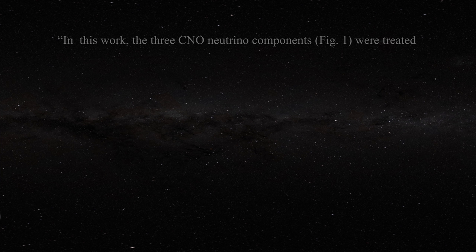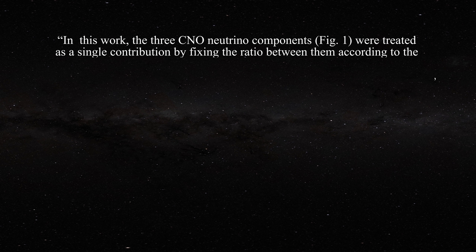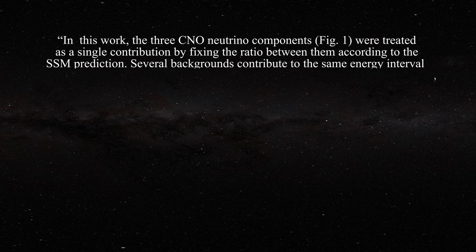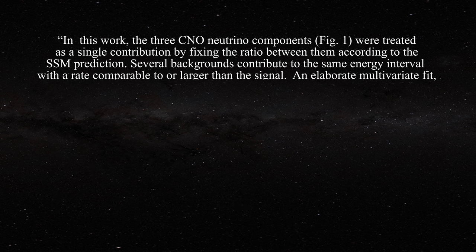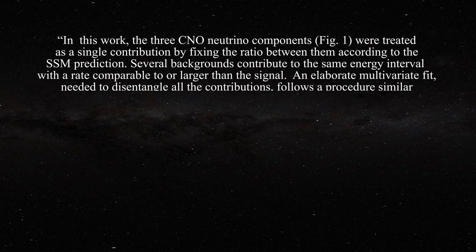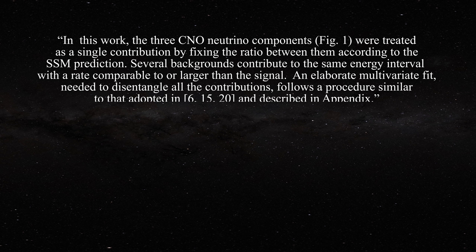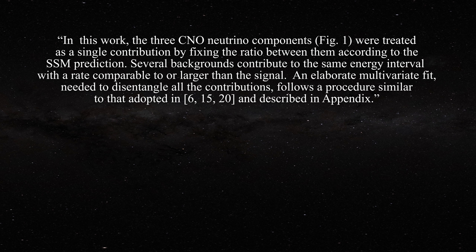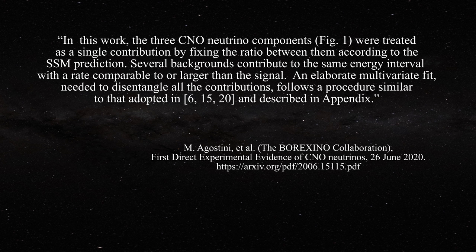Here is just one quote from one of their papers. In this work, the three CNO neutrino components figure one were treated as a single contribution by fixing the ratio between them according to the standard solar model prediction. Several backgrounds contribute to the same energy interval with a rate comparable to or larger than the signal. An elaborate multivariate fit needed to disentangle all of the contribution follows a procedure similar to that adopted in references 6, 15, and 20 and described in the appendix. Their claims are little more than wishful thinking coupled with a good dose of public press.